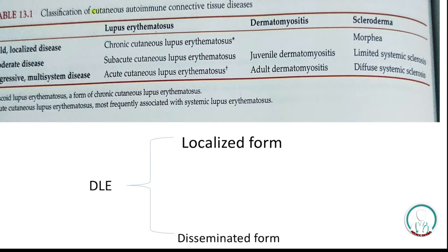We will discuss lupus erythematosus and dermatomyositis; scleroderma will be discussed in further slides. Lupus erythematosus has three variants: the chronic cutaneous lupus erythematosus, which is the mild form — some writers prefer the term discoid lupus erythematosus; the subacute cutaneous lupus erythematosus, a somewhat mild form; and the aggressive multi-system acute cutaneous lupus erythematosus, associated with systemic lupus erythematosus. Dermatomyositis will also be discussed.